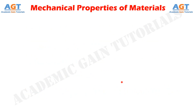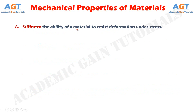Stiffness. It is defined as the ability of a material to resist deformation under stress. The resistance of a material to elastic deformation or deflection is called stiffness or rigidity. A material that suffers slight or very less deformation under load has a high degree of stiffness or rigidity. For instance, suspended beams of steel and aluminium may both be strong enough to carry the required load but the aluminium beam will sag or deflect further, meaning the steel beam is stiffer or more rigid than the aluminium beam.